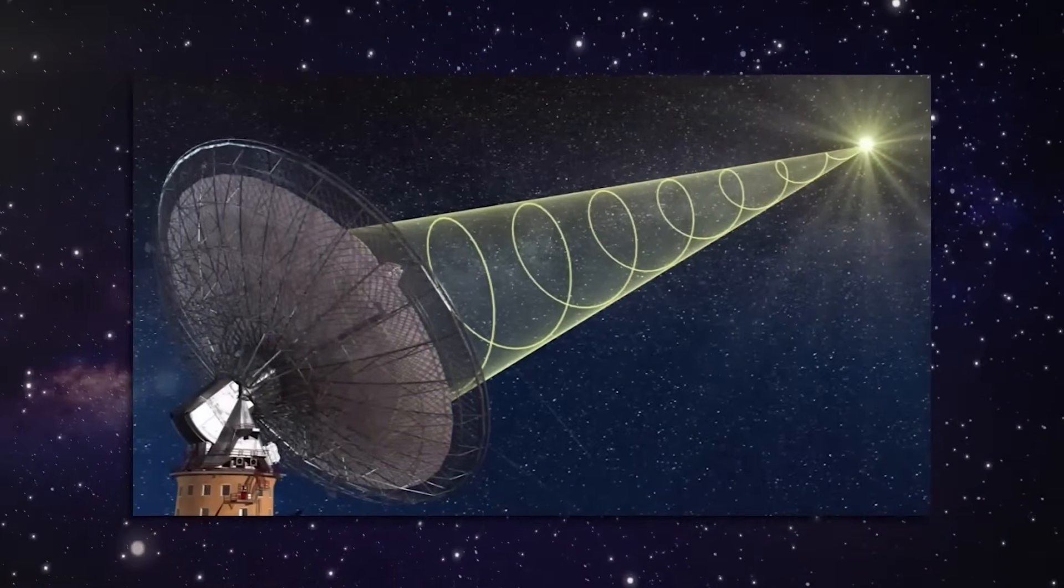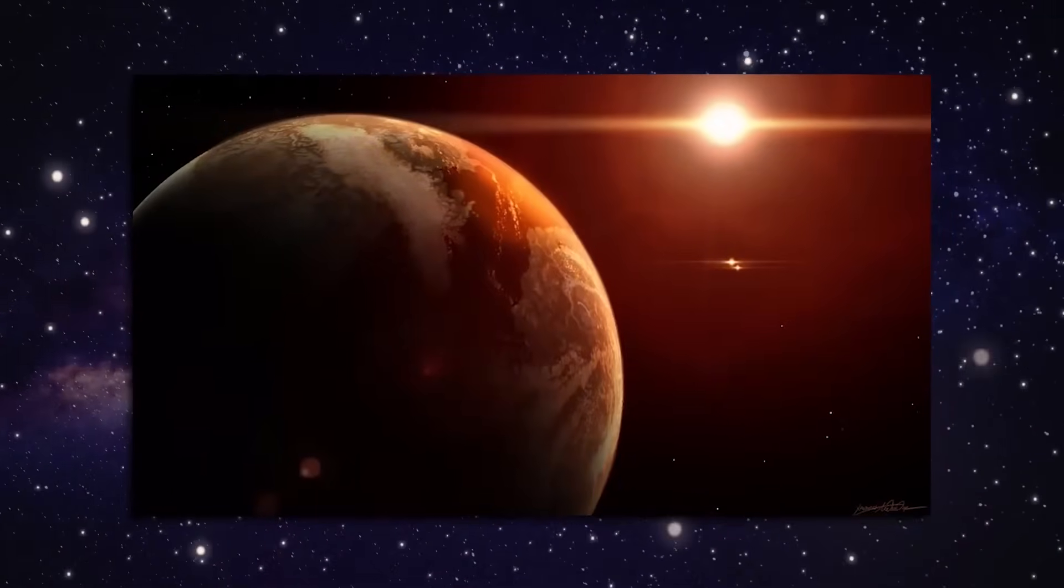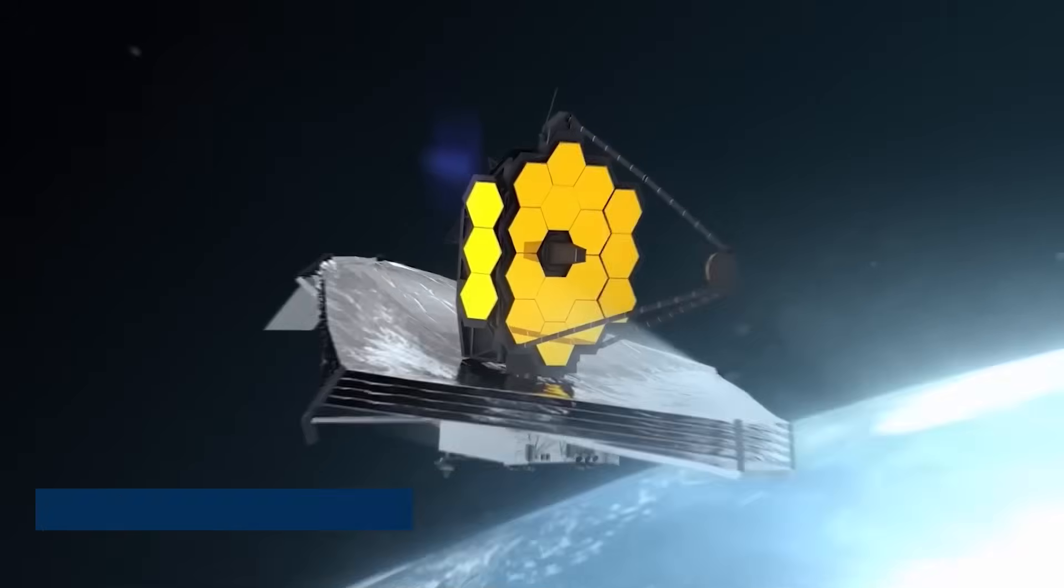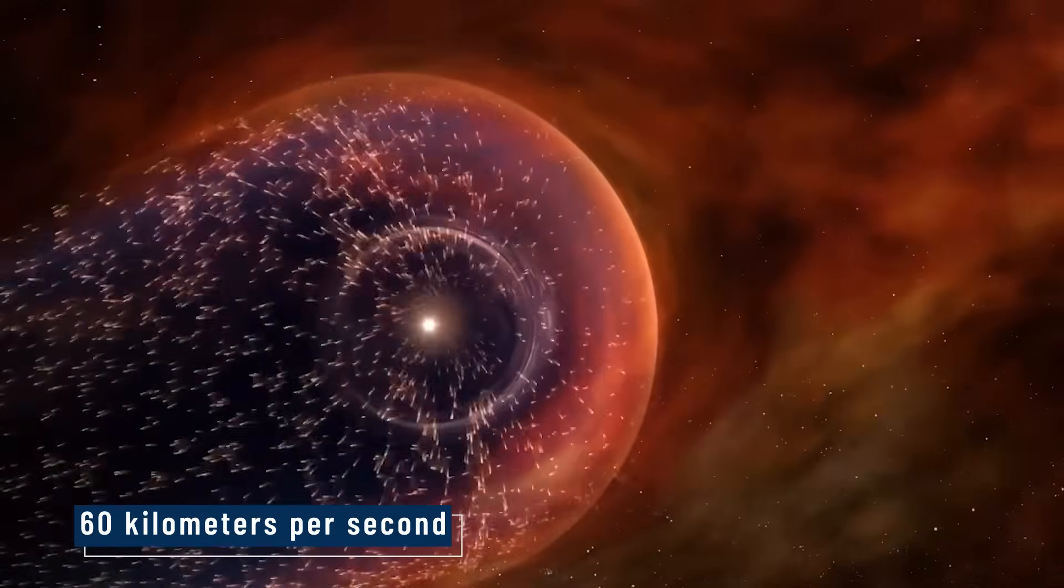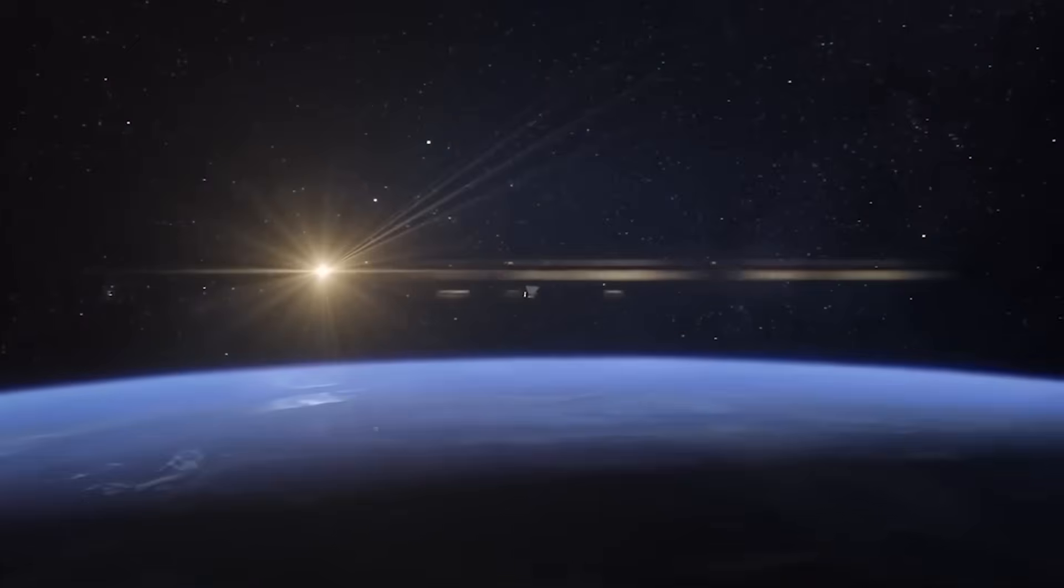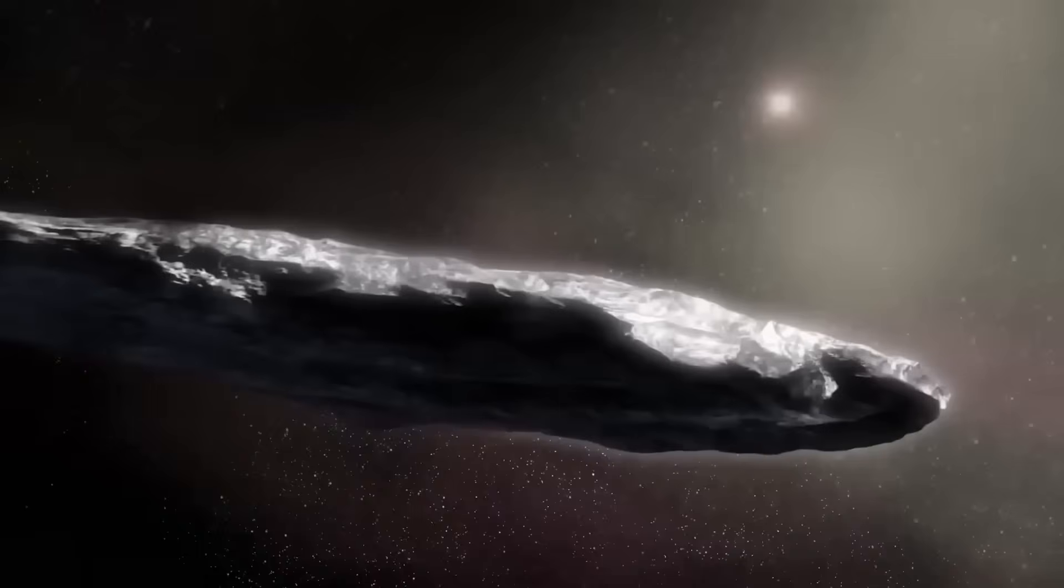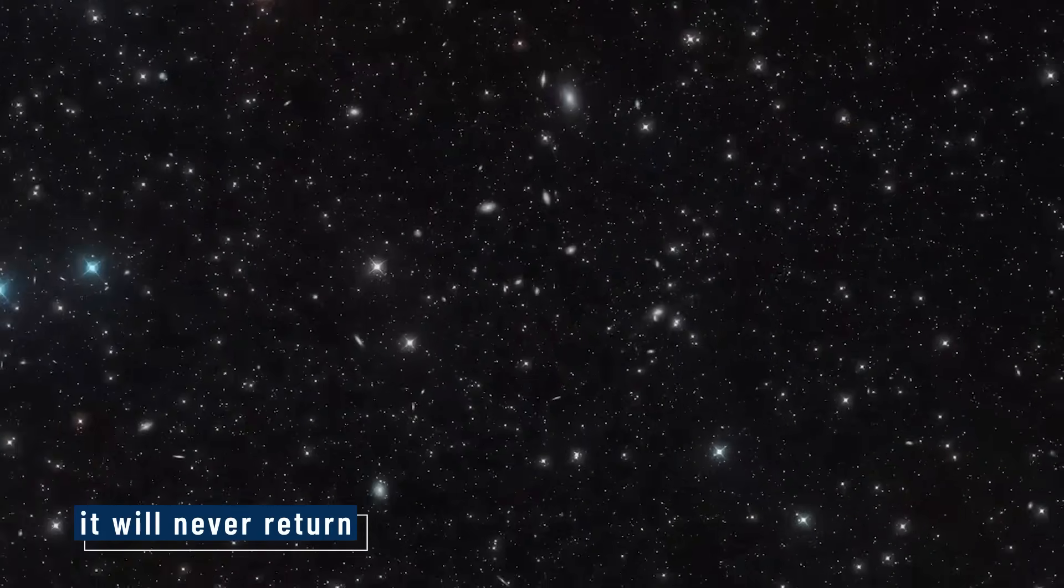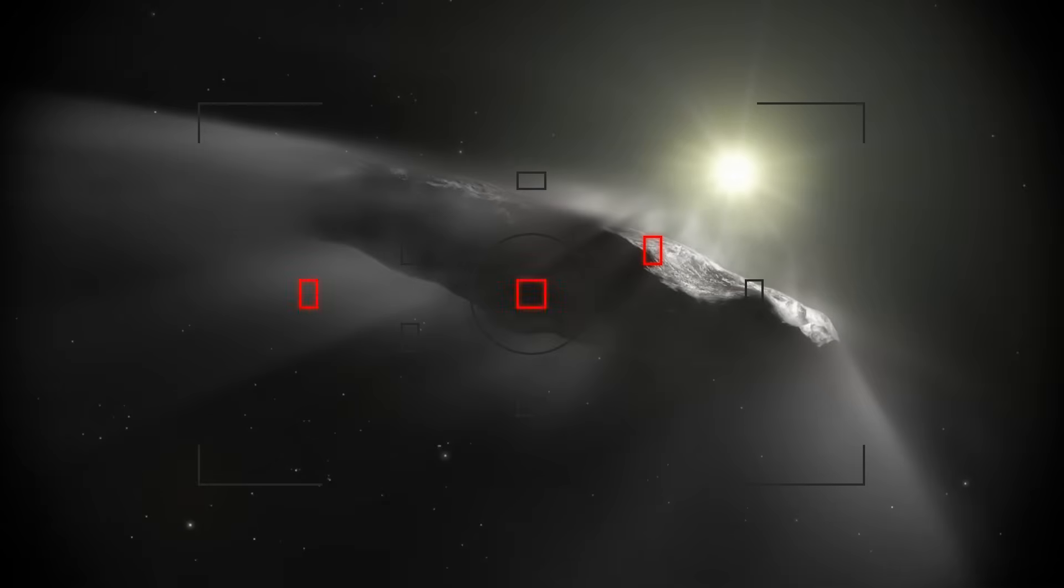What startled astronomers wasn't just that it came from beyond our sun, but how fast it was moving. 3i/ATLAS cut through the solar system at nearly 60 kilometers per second, entering from an unusual high inclination angle, a direction that no known solar body follows. That speed means one simple striking truth. It will never return. Gravity from the sun, or any of the planets, isn't enough to pull it back. This is a one-way passage through our neighborhood, a brief encounter before it vanishes back into the darkness between stars.